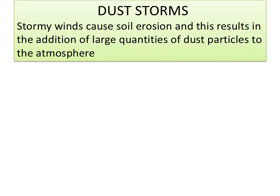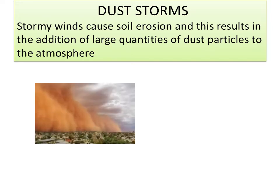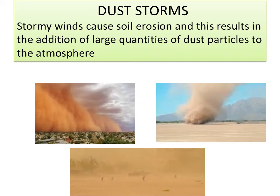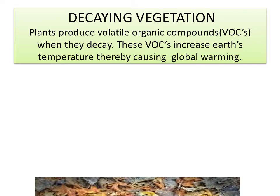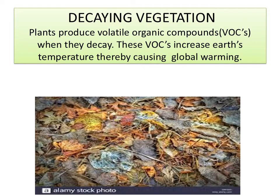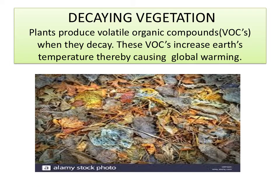Dust storms: stormy winds cause soil erosion, resulting in addition of large quantities of dust particles to the atmosphere. Decaying vegetation: plants produce volatile organic compounds (VOCs) when they decay. These VOCs increase Earth's temperature, thereby causing global warming.